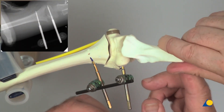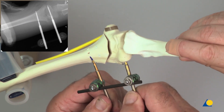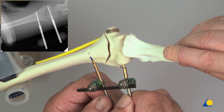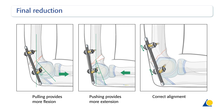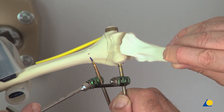With the proximal fragment in a true AP view, the distal fragment is manipulated until a satisfactory orientation is obtained. With the upper arm held firmly and the elbow at 90 degrees, pulling along the axis of the forearm causes flexion and pushing causes extension of the distal fragment. Using these manoeuvres, a correct alignment can be achieved. Once the reduction is achieved, the clamps are fully tightened.